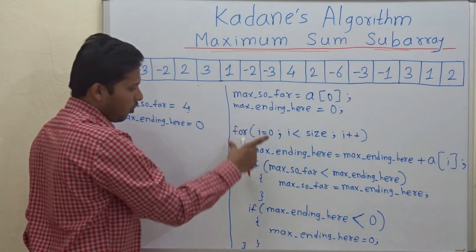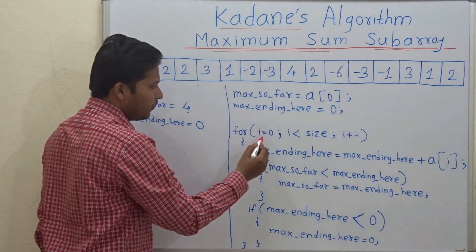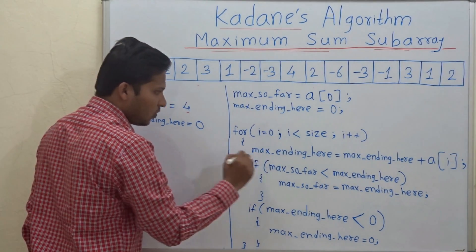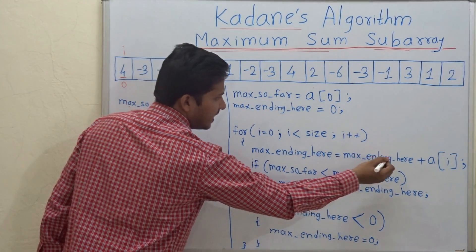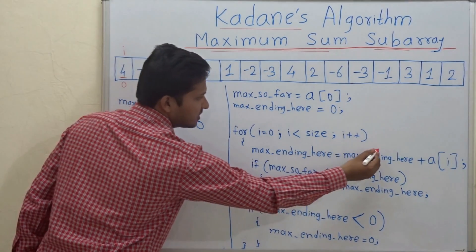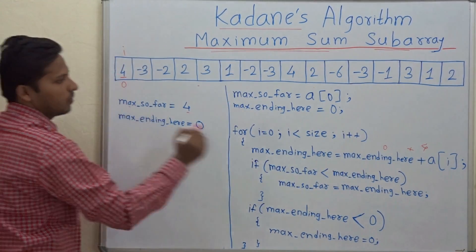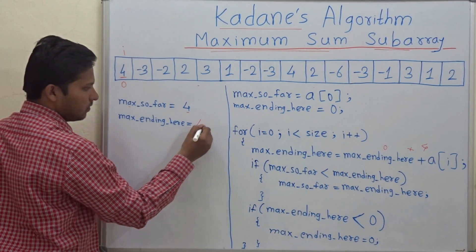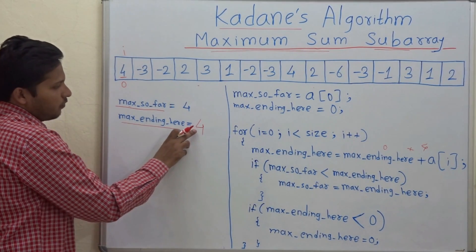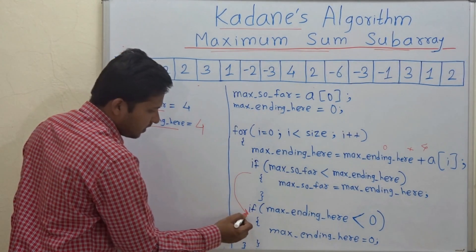Now let's start with the for loop. This algorithm is called Kadane's algorithm. For i equal to 0, i is pointing to the 0th index of this array. max_ending_here is equal to max_ending_here plus a[i]. So max_ending_here is 0, and 0 plus a[0] which is 4 equals 4. Now check: if max_so_far is less than max_ending_here — 4 is less than 4, no. So we go to the next block: if max_ending_here is less than 0. That condition is also not satisfied.